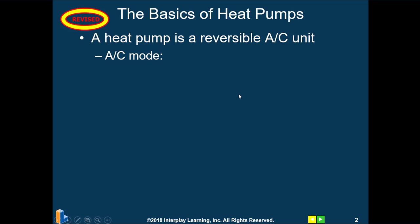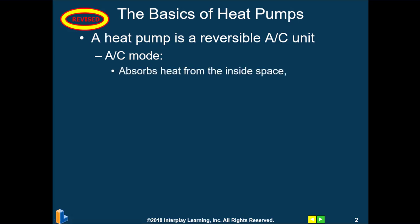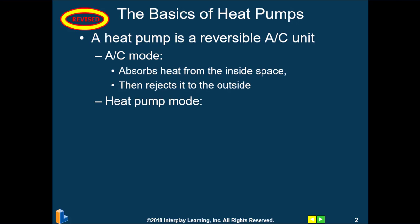In the air conditioning mode, it functions just like a regular air conditioner. Discharge gas coming out of the compressor is routed to the outdoor coil, which is operating as a condenser, where it de-superheats, condenses or changes state, and sub-cools the refrigerant. That refrigerant is then sent through the liquid line to the indoor coil, which is operating as an evaporator. It absorbs heat from the inside space and rejects it to the outside in the outdoor unit.